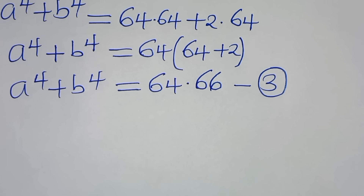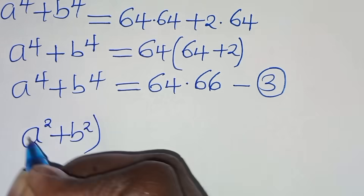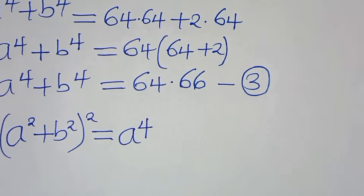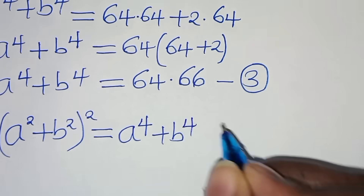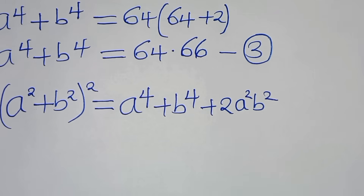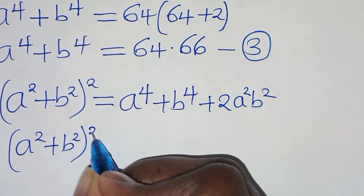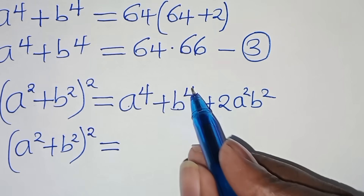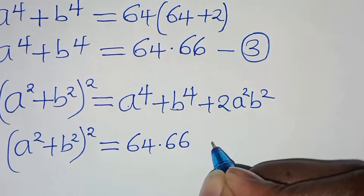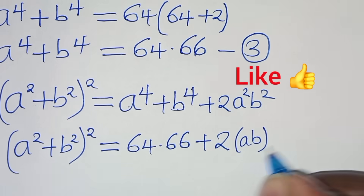Now in the next step, we use the identity: a squared plus b squared, raised to the power of 2, equals a to the power of 4 plus b to the power of 4 plus 2 times a squared b squared. This implies that a squared plus b squared raised to the power of 2 equals a to the power of 4 plus b to the power of 4 — which is equation 3, equal to 64 times 66 — then plus 2 times a squared b squared, which we can express as 2 times (ab) squared.